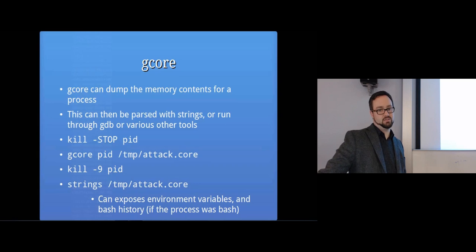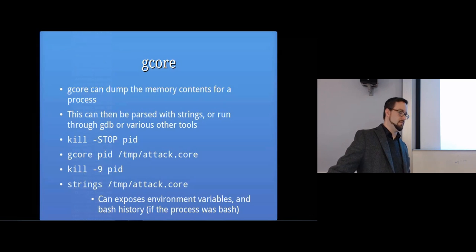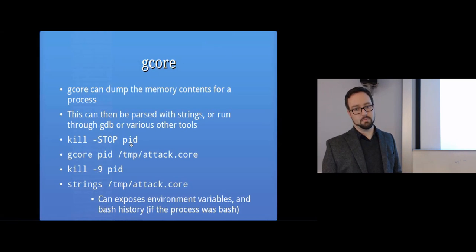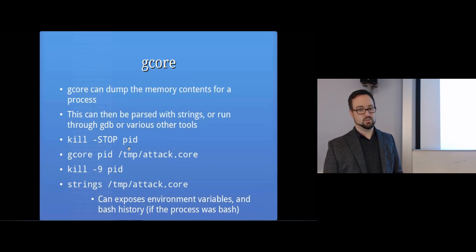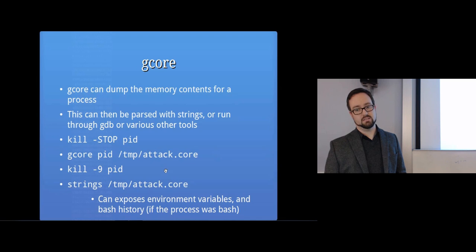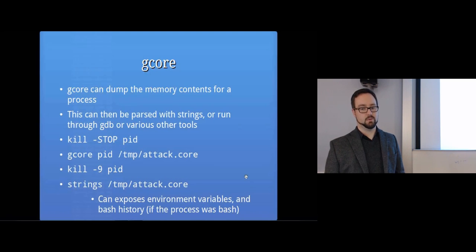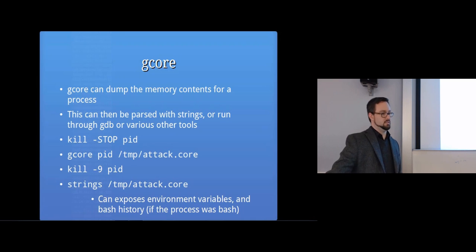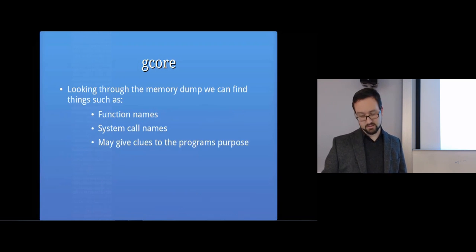Gcore is a command on Unix you can use to dump the memory contents of a process. You can then look through the process's memory for strings, run it through a debugger, or whatever. You'd use 'kill -STOP' with the process ID, run 'gcore' with the process ID to save the dump, then kill off the process if you want. Running strings on it might expose environment variables, bash history, IP addresses, and email addresses that are hardcoded - so it can be quite helpful.